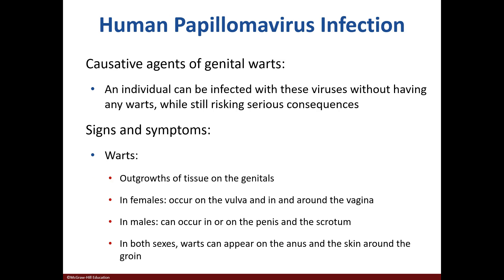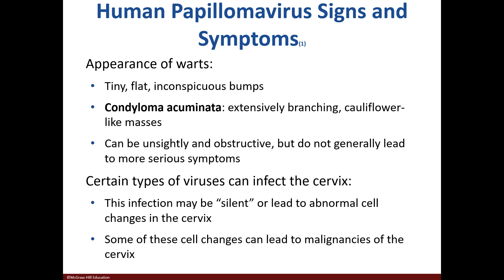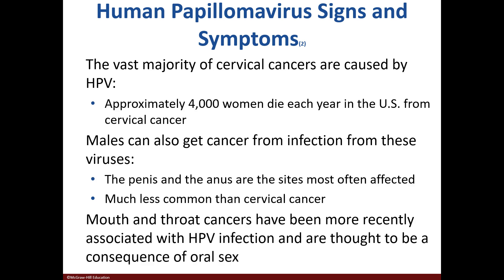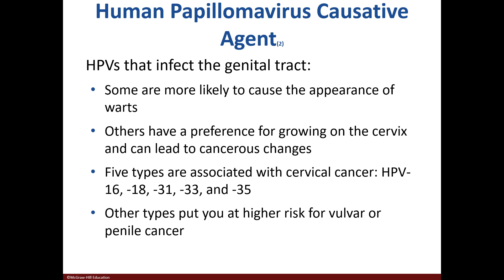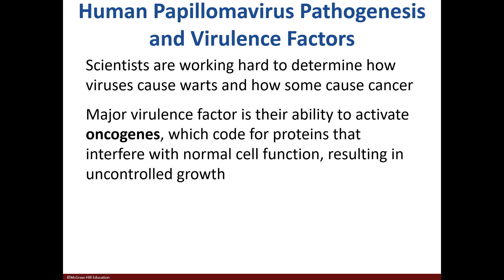The human papillomavirus, or HPV, causes genital warts, which can occur on any structure in the genital region. Sometimes the warts may be flat or masses called condyloma acuminata. Some strains can target the cervix, which can lead to cancer. Males can also get cancer from HPV, and mouth and throat cancer may also occur. There are over 100 types of HPV, which may target the skin or mucous membranes. Five types of HPV are associated with cervical cancer, with others causing vulvar or penile cancer. These viruses contain oncogenes, which lead to uncontrolled cell growth.